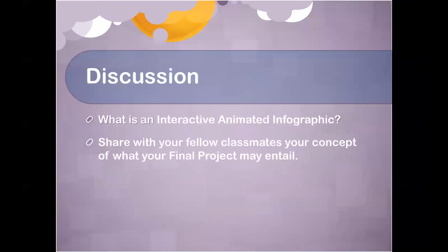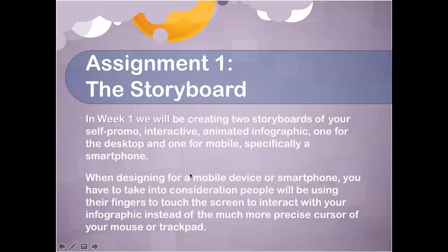So we're talking about the discussion assignment, which is a two-part answer: first, what is an interactive animated infographic, and second, share your concept of what your final project may entail. The assignment requires creating two storyboards of your self-promo interactive animated infographic — one for the desktop, one for mobile, specifically a smartphone. When designing for mobile, you have to consider that people use their fingers, which affects the user interface.